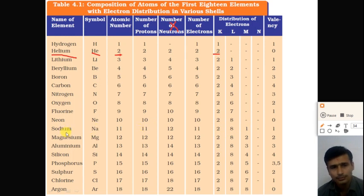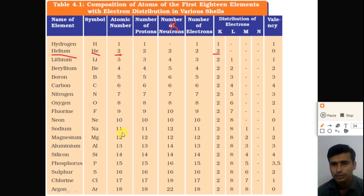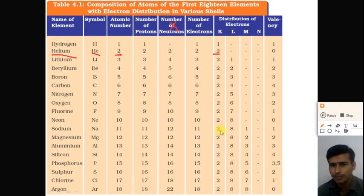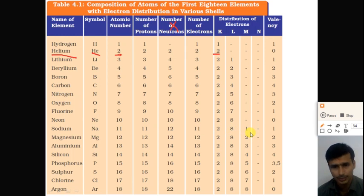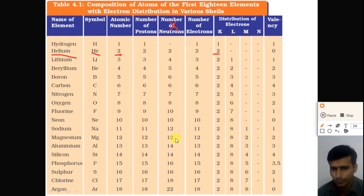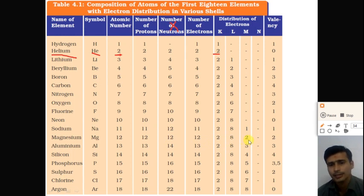Sodium, symbol Na, has atomic number 11, so it has 11 electrons. The electron distribution in sodium is: first orbit = 2 electrons, second orbit = 8 electrons, and the remaining 1 electron is in the third orbit. Magnesium has atomic number 12. Its electron distribution is: first orbit = 2, second orbit = 8, third orbit = 2. Total number of electrons is 12.